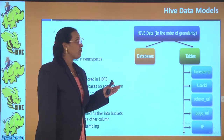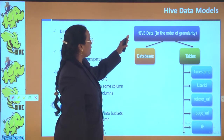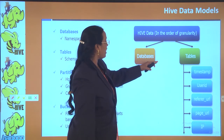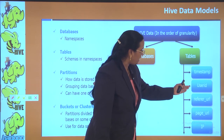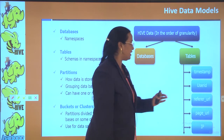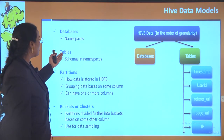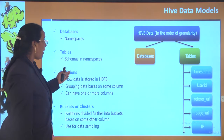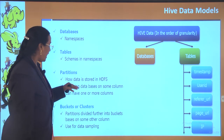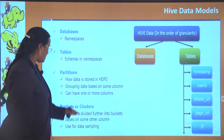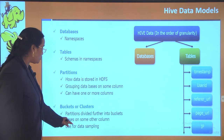Now let us see the Hive data models. Hive data models are represented in order of granularity: databases and tables. A table has columns such as timestamp, user ID, referrer URL, page URL, and IP. A database consists of a namespace, and tables have schemas within namespaces. Partitions define how data is stored in HDFS, grouping data based on one or more columns. Buckets or clusters divide partitions further based on some other column, and are used for data sampling.